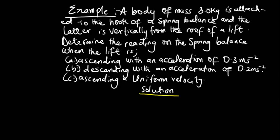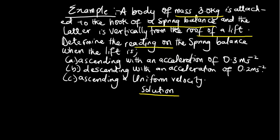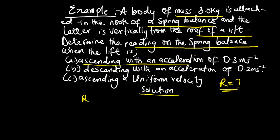Welcome to this example. A body of mass 3 kilograms is attached to the hook of a spring balance, which is hanging vertically from the roof of a lift. We need to determine the reading on the spring balance — in other words, we are asked to find R. When the lift is ascending, the formula is: R minus W equals ma, which gives R equals mg plus ma.